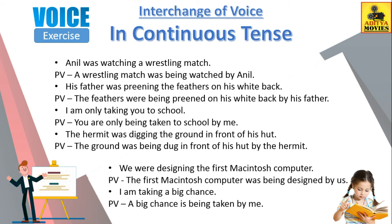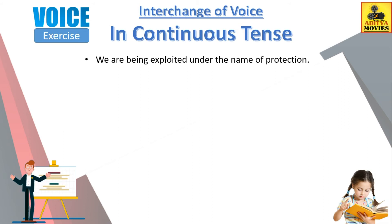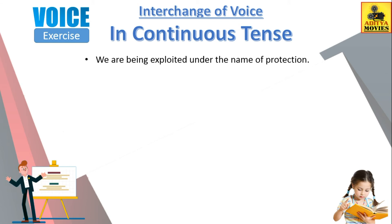Now let us understand how to convert the passive voice of continuous tense back into active voice. Take the sentence: 'We are being exploited under the name of protection.' Analyzing it: 'we' is the subject, 'are' is to be of present continuous tense. After to be, instead of V4, we have being + V3 — so this is passive voice of continuous tense.